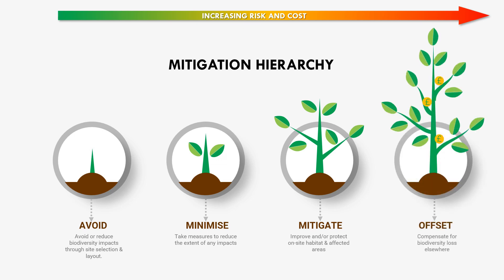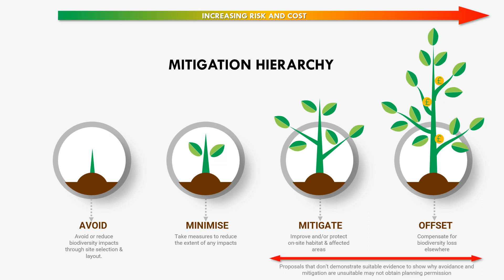Offsetting aims to compensate for biodiversity loss. It's the final resort after all the other options have been exhausted, and it's usually the most expensive, complex and high-risk approach. There is a risk that mitigation or offsetting proposals will be rejected and the project does not achieve planning permission if the evidence for not avoiding or mitigating the impacts is not well demonstrated.